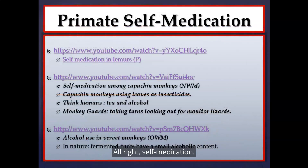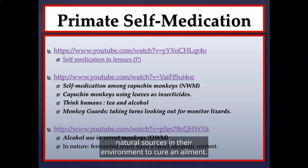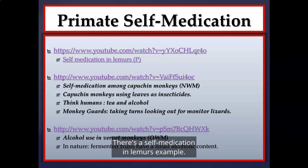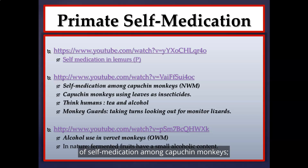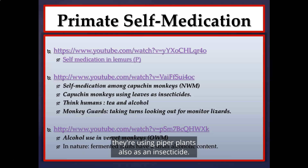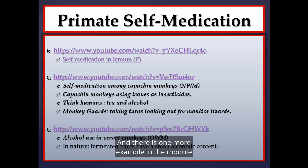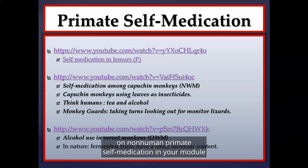Self-medication is the idea that non-human primates can utilize natural sources in their environment to cure an ailment. Examples include lemurs using millipedes as an insecticide, capuchin monkeys using piper plants as an insecticide, alcohol use in vervet monkeys, and charcoal use in red colobus monkeys. All four examples of non-human primate self-medication in the module are important for the discussion this week.